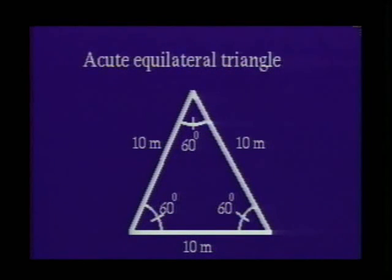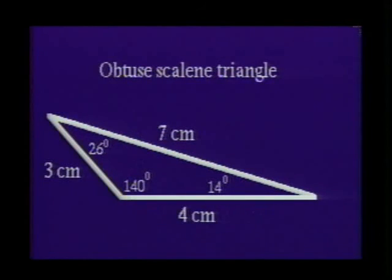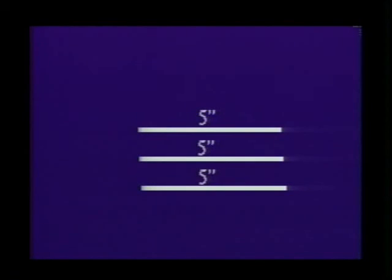Both classifications can be used together to describe a triangle. For instance, we could have an acute equilateral triangle, an isosceles right triangle, or an obtuse scalene triangle. Be aware that not all combinations are possible. For example, an obtuse equilateral triangle cannot exist.